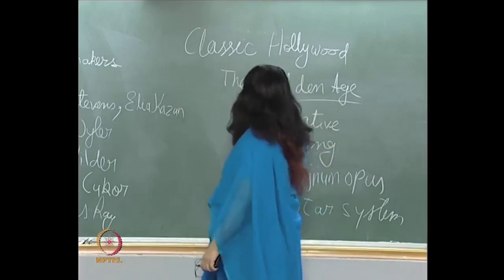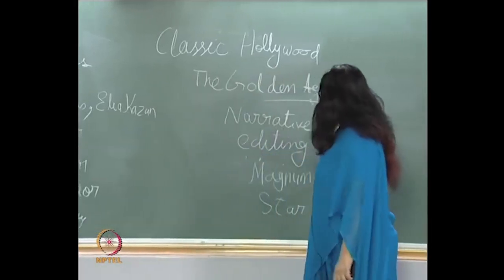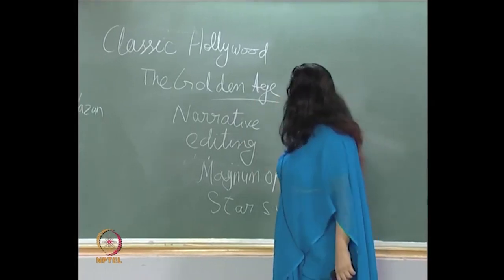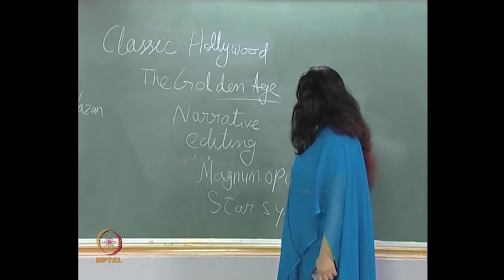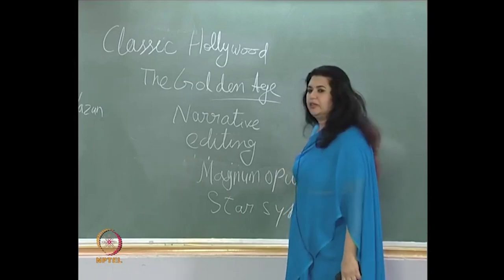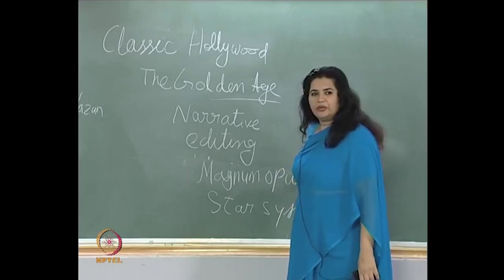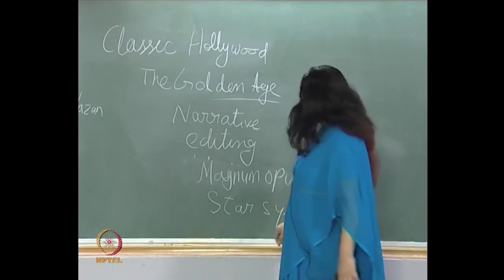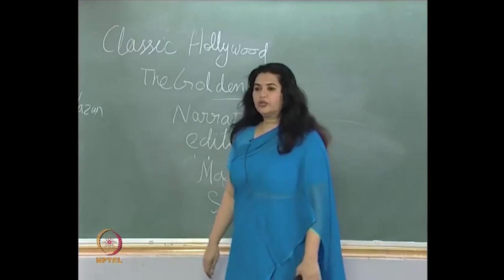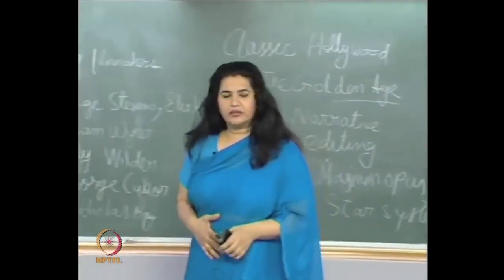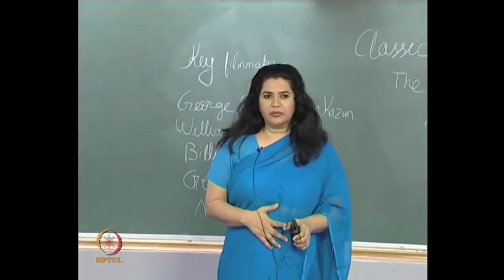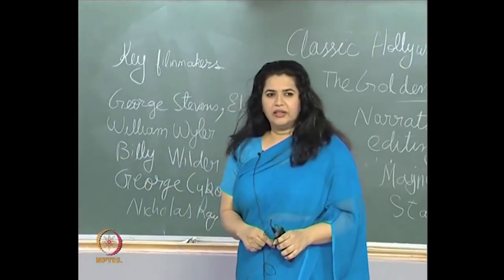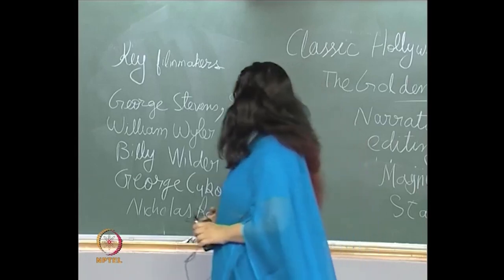Today we are going to continue with our discussion of narrative editing and characterization in the golden age of Hollywood — how most well-known movies fell in the category of magnum opus productions and how studios controlled stars. The star system, or studio-controlled star system, are the key features we will be discussing.